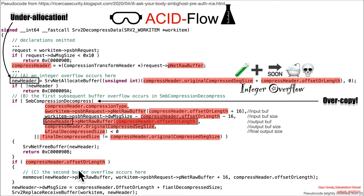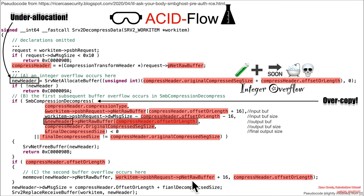So then once again, we see an attacker-controlled value used for an if-check, and of course the attacker can make sure that that is non-zero. And then what do we have on this line but a mem move with an attacker-controlled length, an attacker-controlled input buffer, and an underallocated buffer. So that is yet another overcopy — it is two overflows for the price of one. Oh, what a day! What a glorious day!